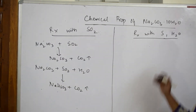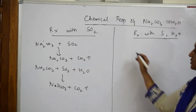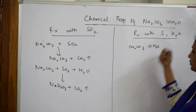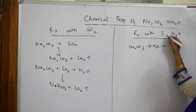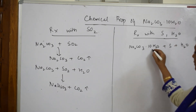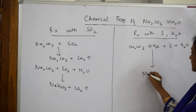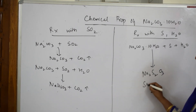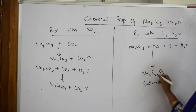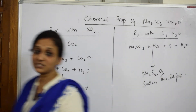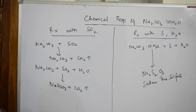When sodium carbonate decahydrate reacts with elemental (colloidal) sulfur in the presence of water, a different product is formed: Na₂S₂O₃, which is called sodium thiosulfate. Remember both combinations — with SO₂ alone versus with elemental sulfur and water — for the exam.